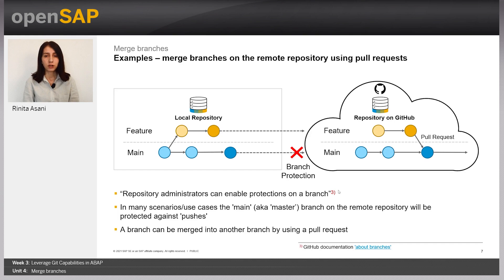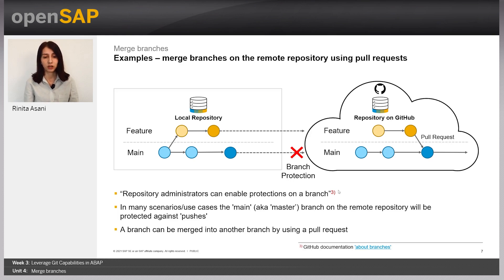Now let's see merge branches on the remote repository. In this use case we have the local repository and the remote repository which resides on GitHub. For the feature branch there is no problem — we can push our changes to the remote — but for the main branch this is not possible because it has branch protection. Repository administrators can enable protections on a branch, meaning the branch is protected against pushes. The only way to merge your changes to the main branch is to create a pull request. Pull request is at the heart of collaboration on GitHub: developers propose their changes and wait for someone to review and approve them before they can be merged to the main branch.